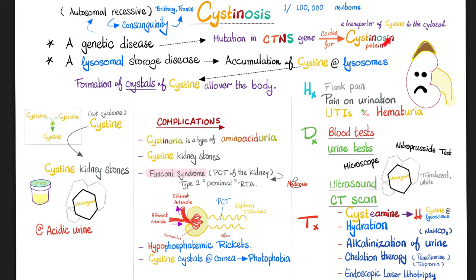Normally, this cystinosin protein should transport cysteine from the lysosome to the outside — to the cytosol. But if there is a mutation in this gene, the protein will be defective. Bad gene equals bad protein, which means cysteine cannot be transported from the lysosome to the cytosol. Therefore, all the cysteine will pile up and accumulate in the lysosome — a lysosomal storage disease. This accumulation happens throughout the body, because lysosomes are present in almost every cell.